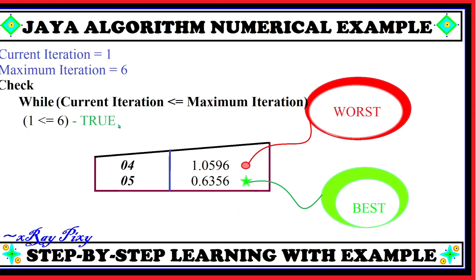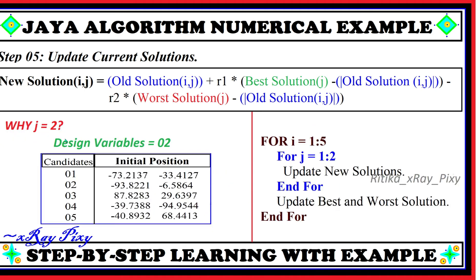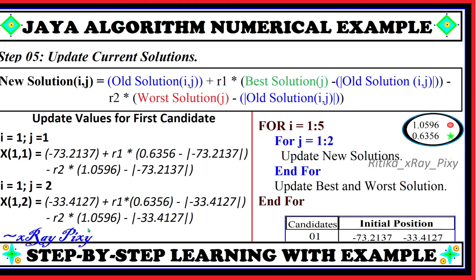The current iteration is 1 and the maximum is 6, so the condition is true and we enter the main loop. For each candidate, we will update the current solution using the update equation. The value of i runs from 1 to 5 (population size), and j equals 2 because we have two design variables — so we repeat the inner loop twice for each candidate.